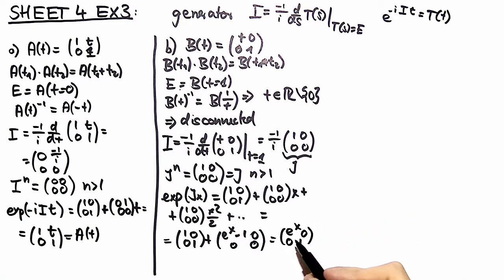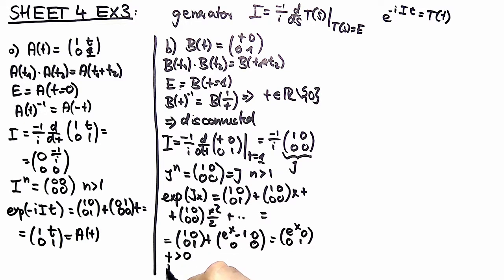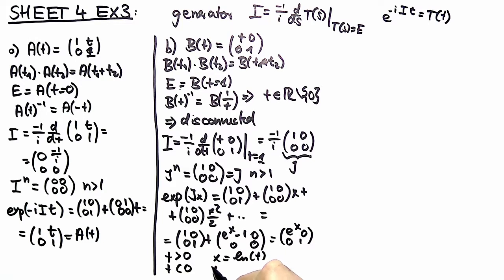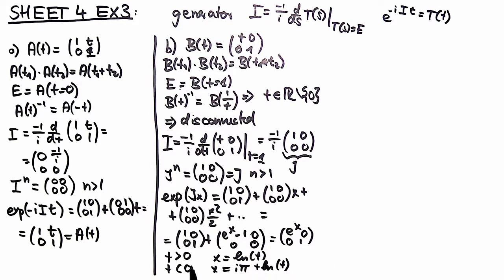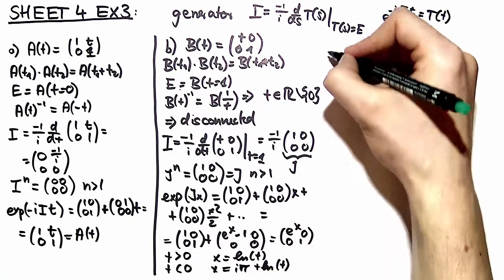To recover B(t), we choose different parameters for t greater than zero and t less than zero. For t greater than zero, we set x equal to the logarithm of t. For t less than zero, we extract a minus one and set x equal to i*pi plus the logarithm of t. The parameter space therefore lies in the complex plane as two lines separated by e to the i*pi, and they cannot be connected — confirming it is a disconnected group.